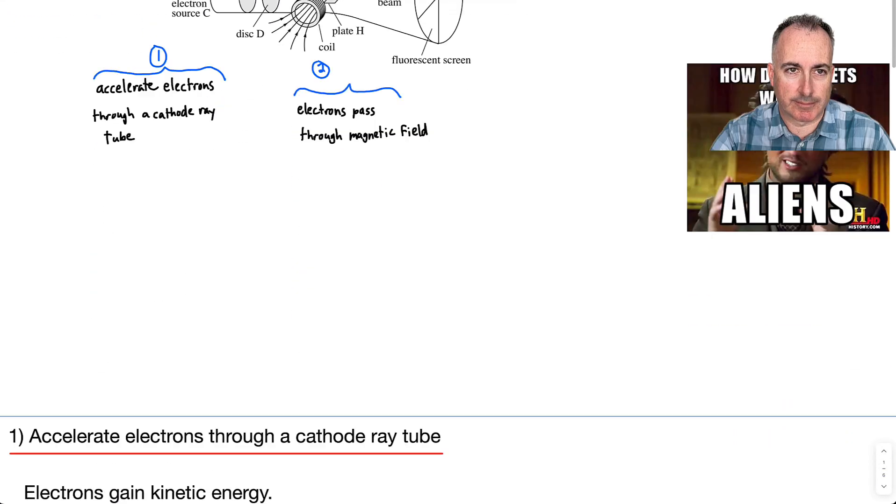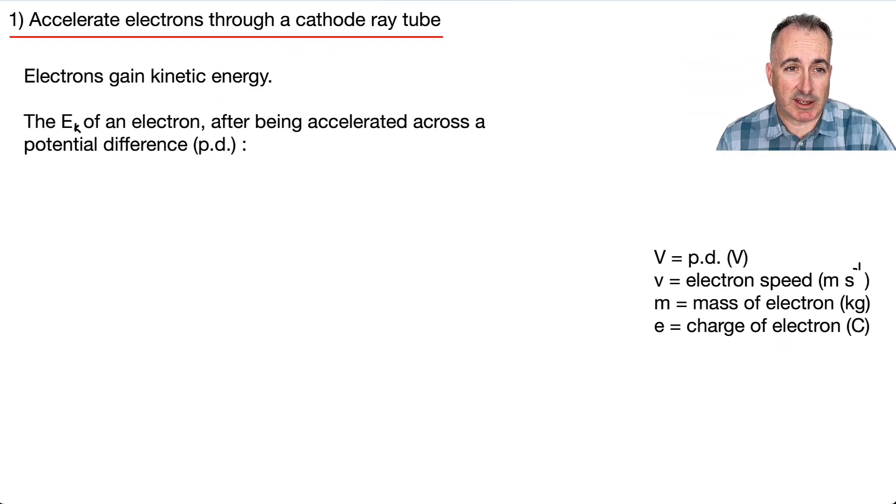Let's go over each of these in detail. We'll start with number 1. If we're going to be accelerating these electrons through a cathode ray tube, they're going to be gaining kinetic energy. What's the kinetic energy of an electron after being accelerated across a potential difference?